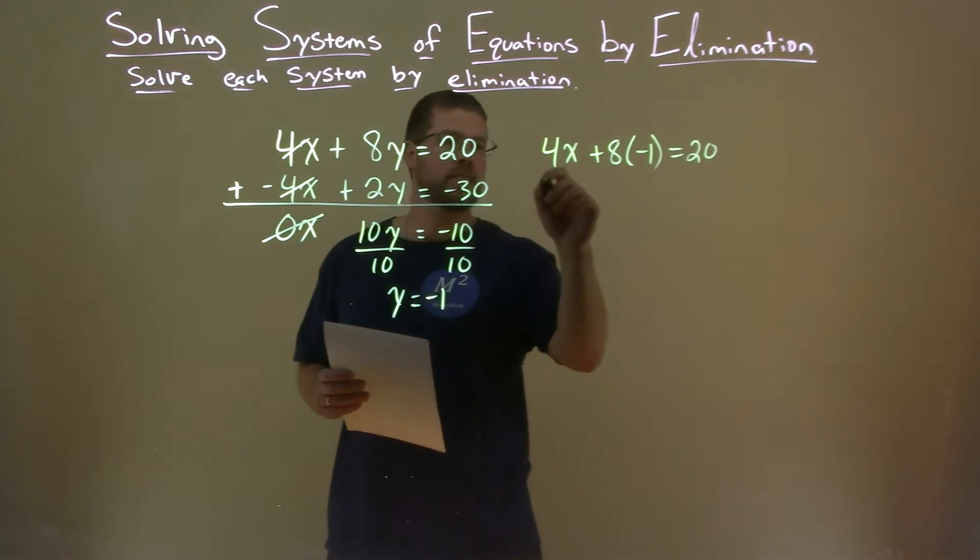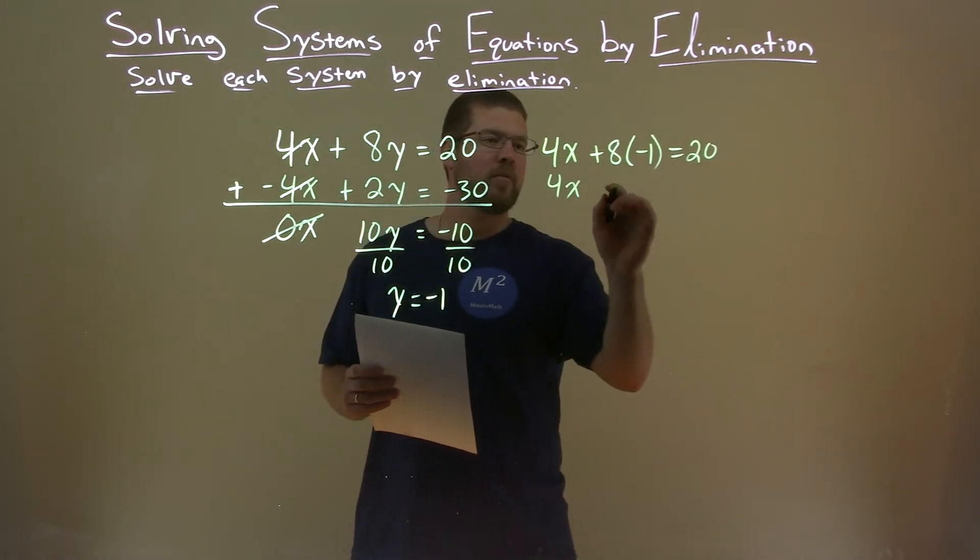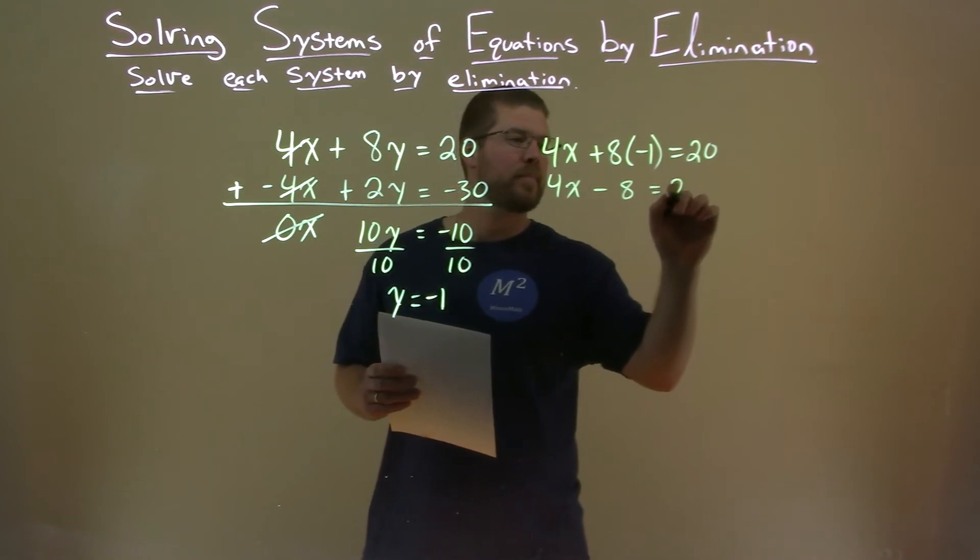Now I'm solving for x. 4x equals 8 times negative 1, which is minus 8. We have 20.